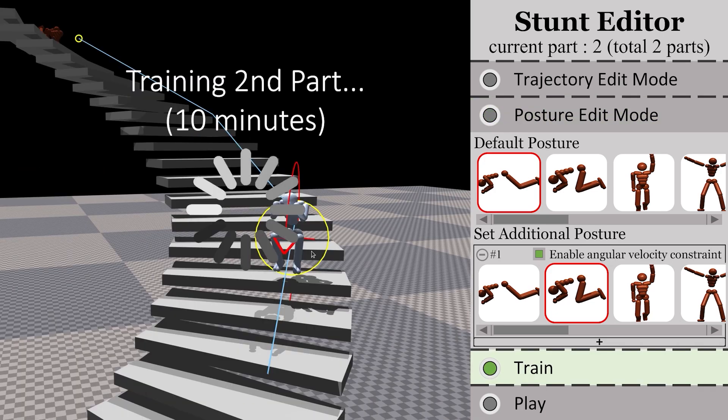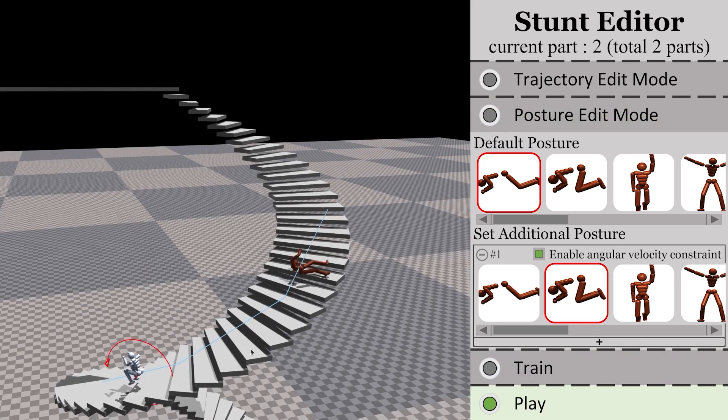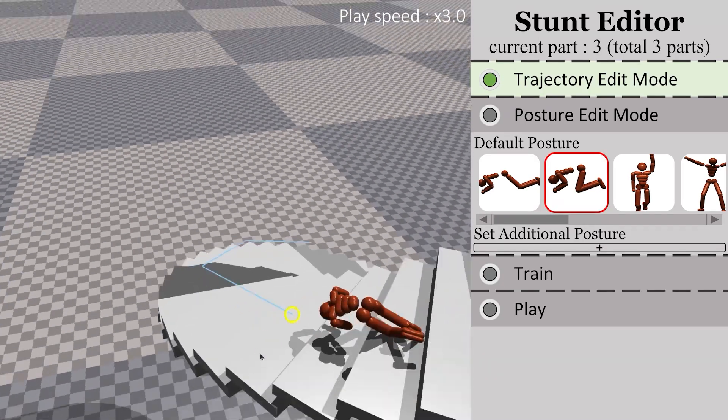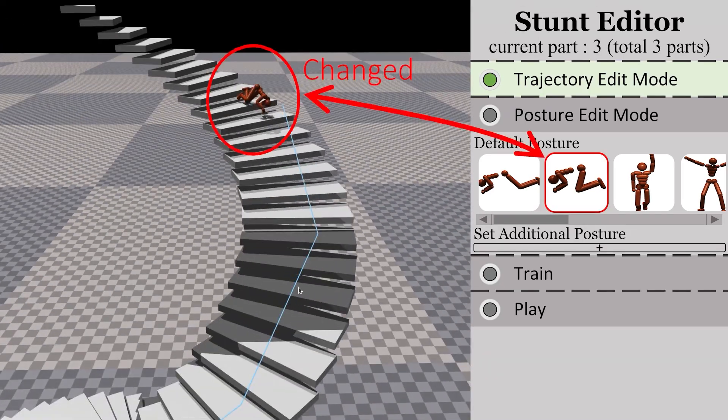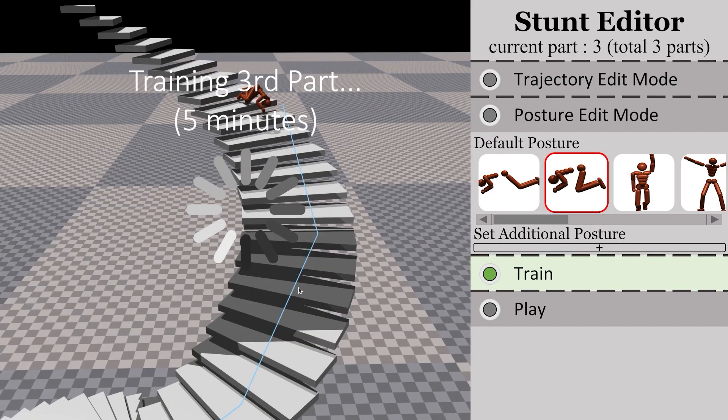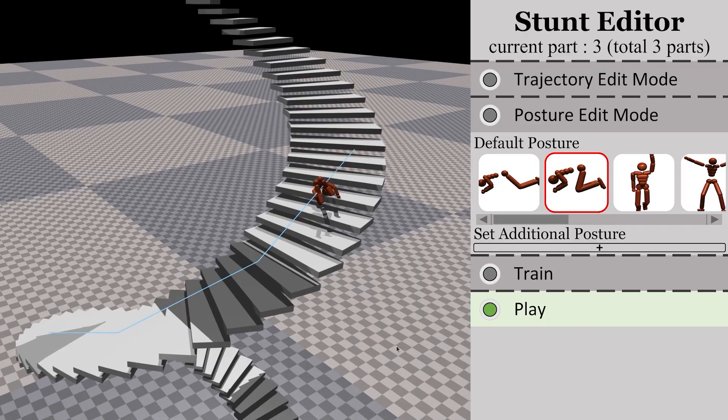After 10 minutes of training, the stunt actor successfully adopts the crouched posture at the designated position, with the correct orientation and angular velocity. Moving on to the third part, the default posture has been changed, as it was modified to a crouched posture in the previous part. After training, the stunt actor maintains the default posture while following the specified trajectory.